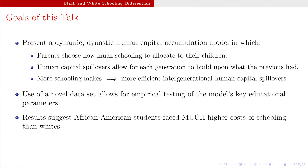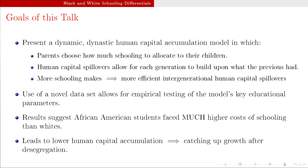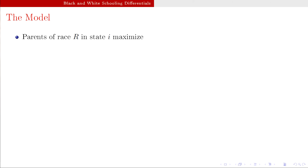The results of the empirical study suggest that African-American students faced much higher costs of schooling than white students did, leading to lower human capital accumulation. If the opportunity cost of schooling is higher, you're accumulating less human capital. Which means after desegregation and school integration, there's going to be catching-up growth — not within one generation, but across multiple generations.